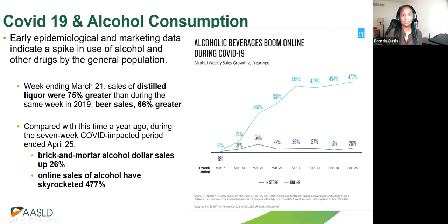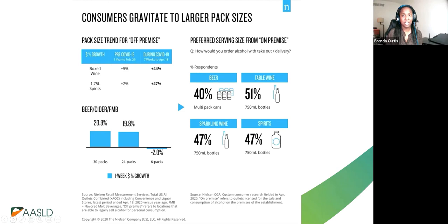Consumers are also buying larger amounts of alcohol for off-premise consumption — not only buying more, but buying larger amounts when they do buy. Comparing the year ending February 29 to the seven weeks through April 18, sales growth were 44% higher for boxed wine and 47% higher for spirits. In the beer category, sales for six-packs are down while sales for 30-packs and 24-packs are up. People are buying more for home consumption and buying larger amounts.